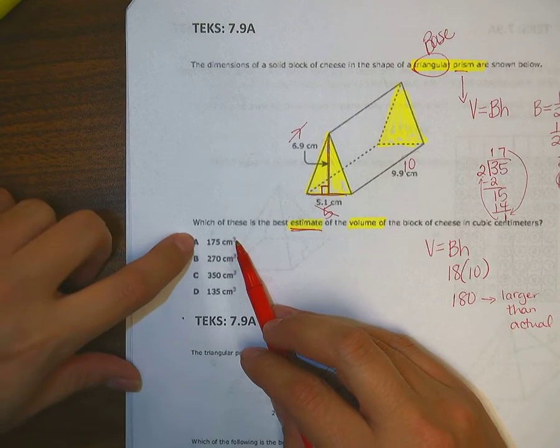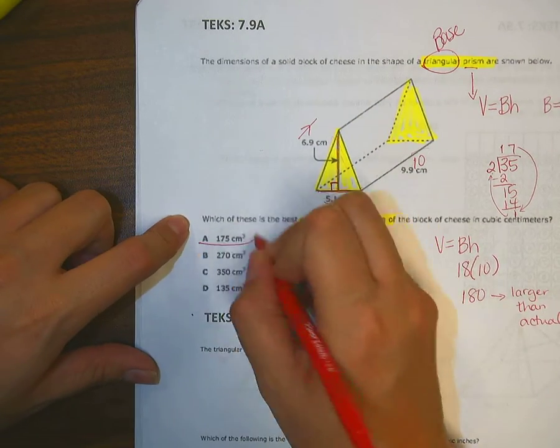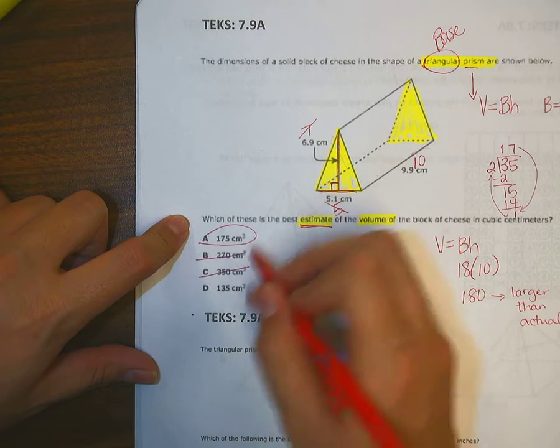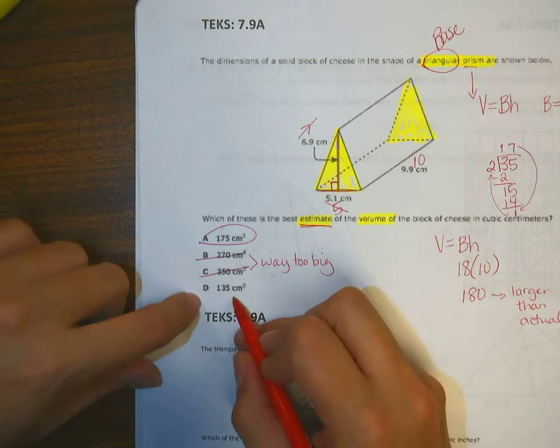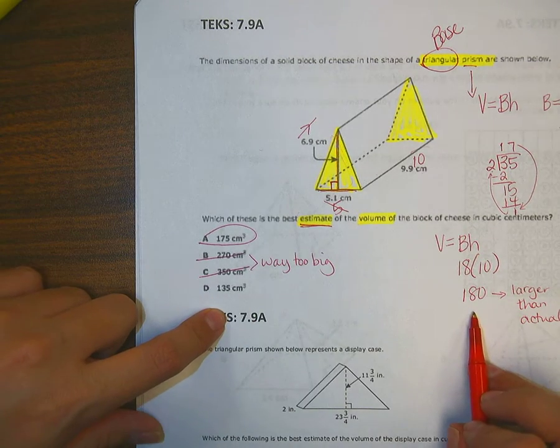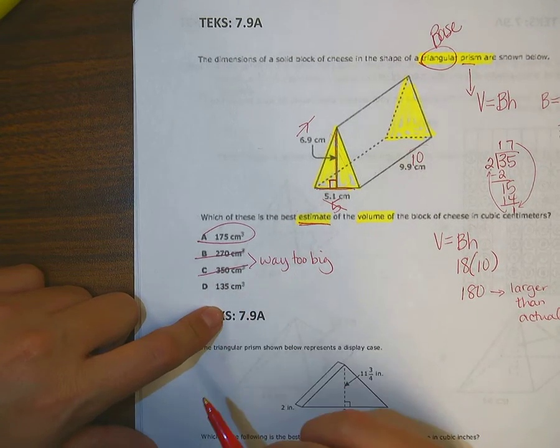Looking at choices. 175. Oh, yeah. Oh, for sure. This one, clearly. Because that's way too big. Both of these, way too big. And this one is just too small. Okay, I didn't round down enough to choose an answer like this.